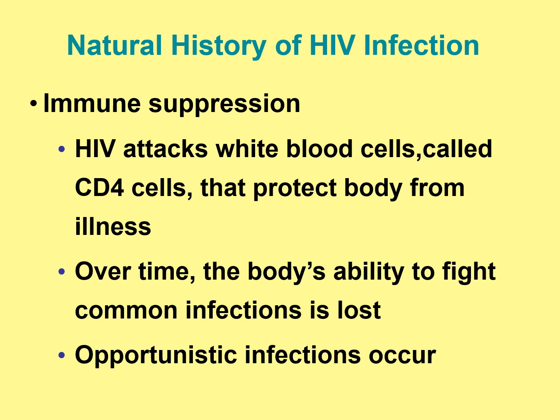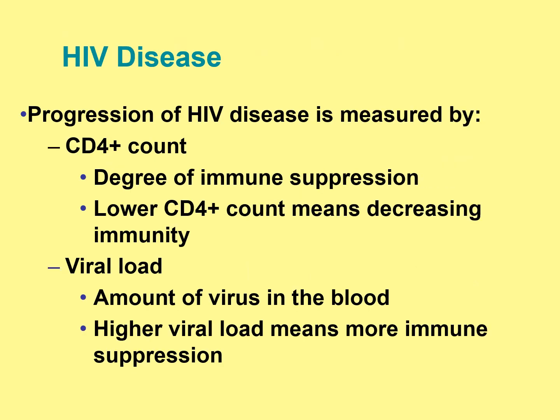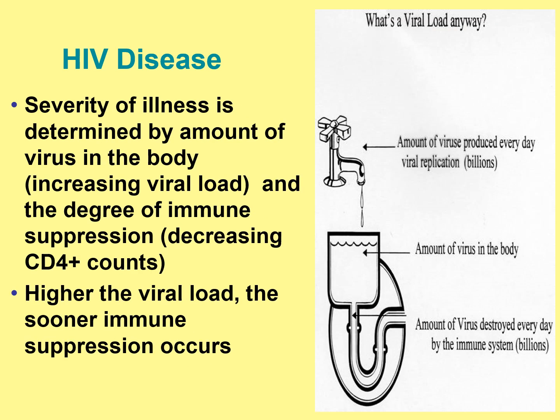HIV attacks white blood cells called CD4 cells that protect our body from illness. Over time, the body's ability to fight common infections is lost, and opportunistic infections can occur. Progression of disease is measured by CD4-plus count, which indicates the degree of immune suppression. A lower CD4-plus count means decreasing immunity. Viral load is the amount of virus in the blood, and a higher viral load means more immune suppression. The higher the viral load, the sooner immune suppression occurs.